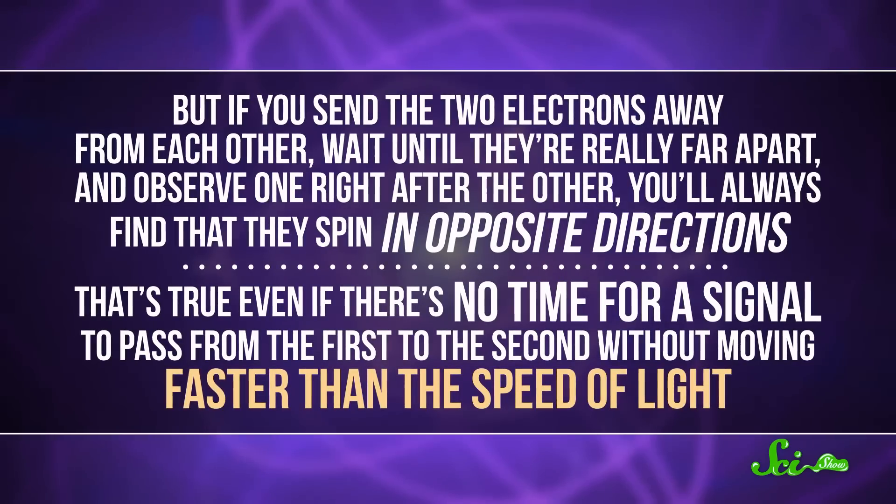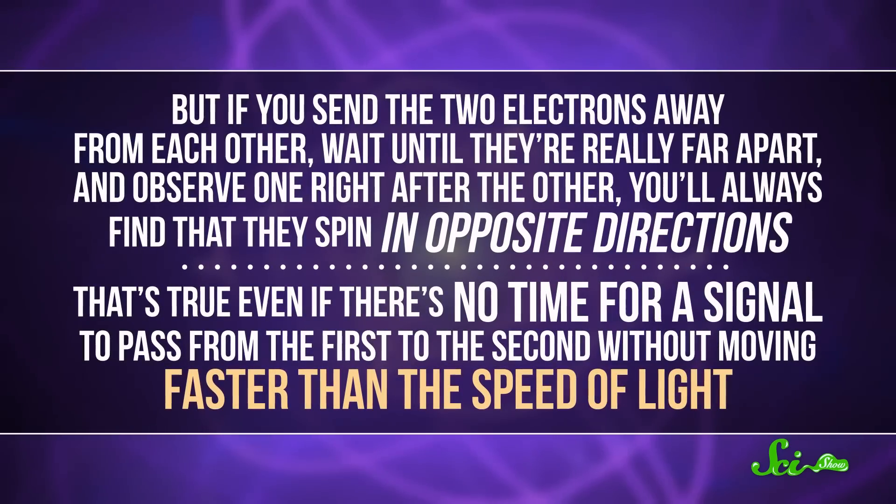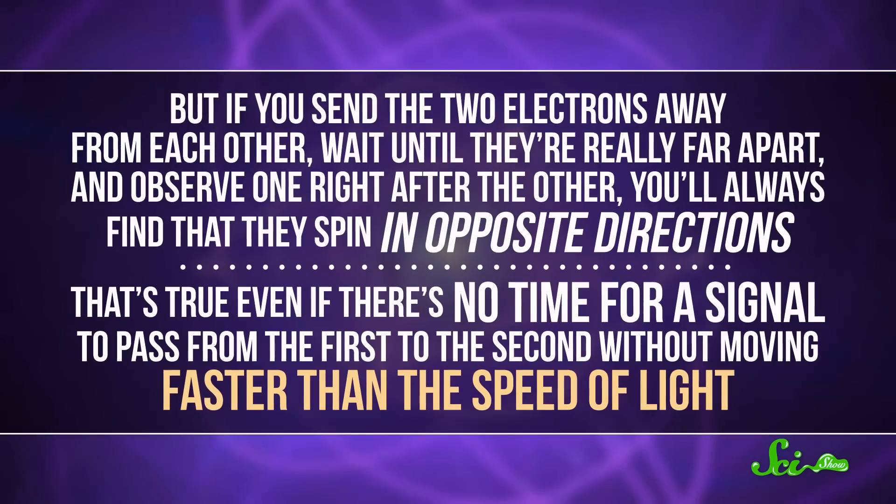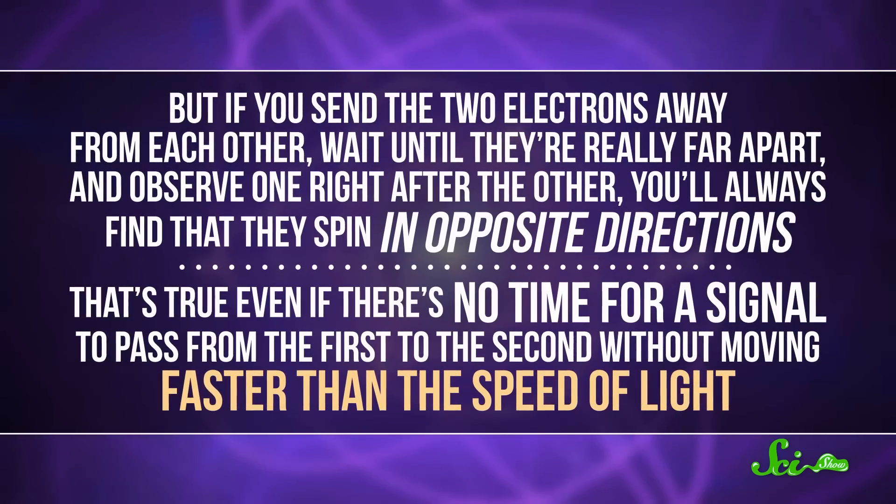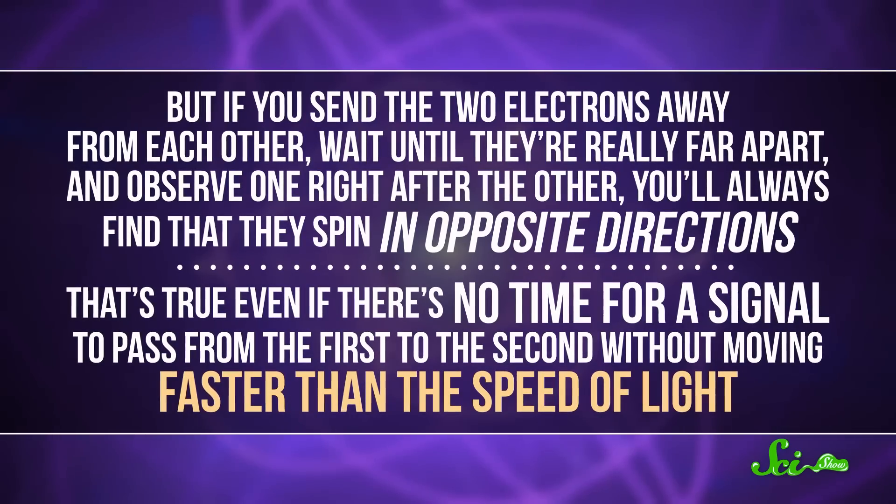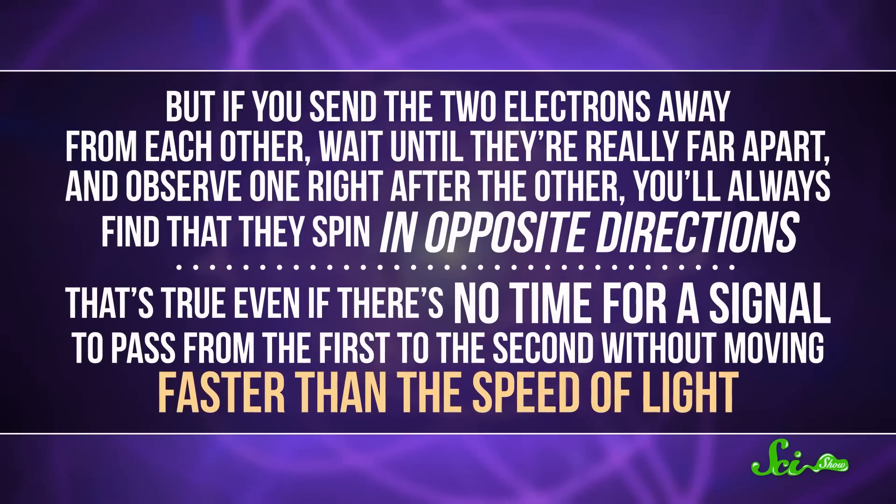But if you send the two electrons away from each other, wait until they're really far apart, and then observe one right after the other, you'll always find that they spin in opposite directions. That's true even if there's no time for a signal to pass from the first to the second, without moving faster than the speed of light. Einstein really did not like this, but we have tested it, and we know that it happens.